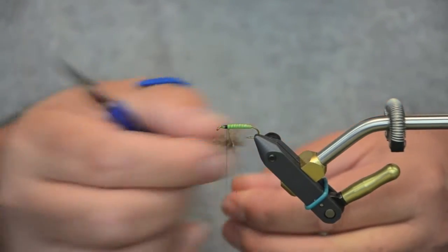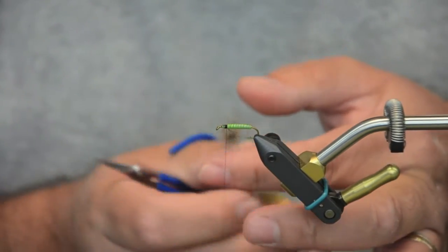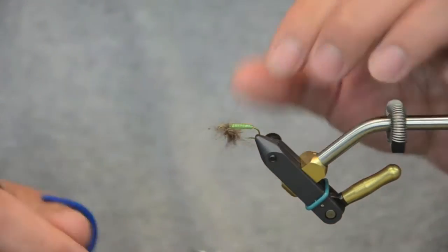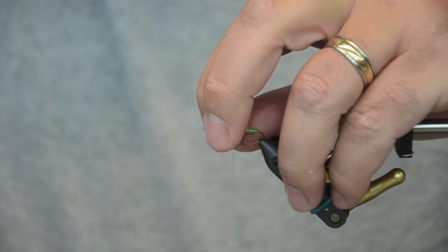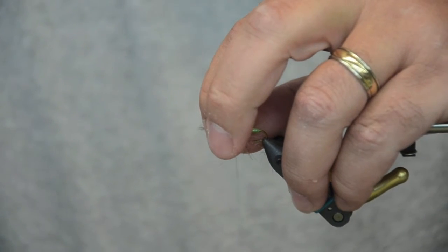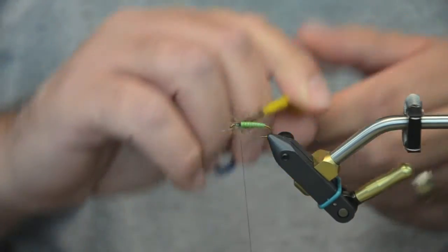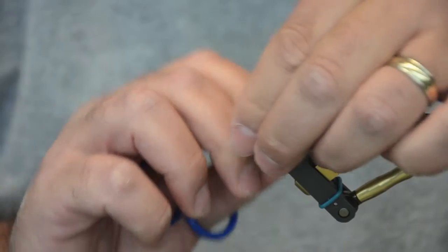So the end result is a very buggy mix of CDC, partridge and dubbing. Oops. Let me fix this. So what I have here is the thorax of CDC, dubbing and partridge.